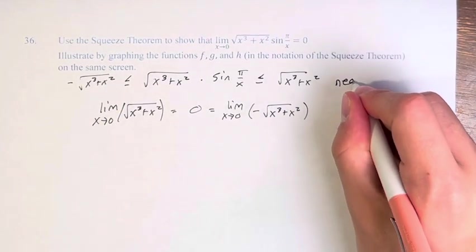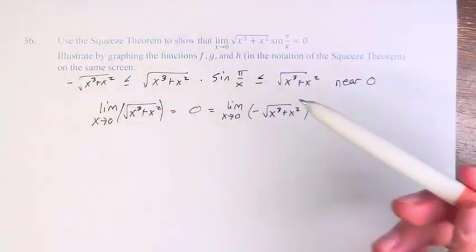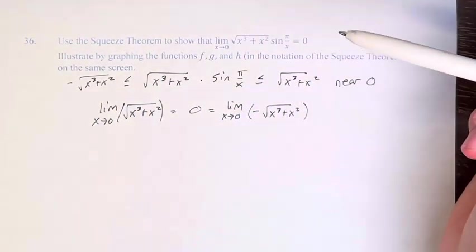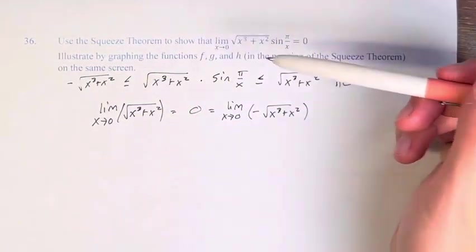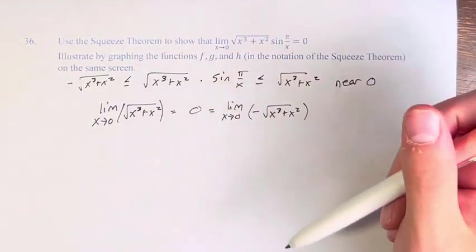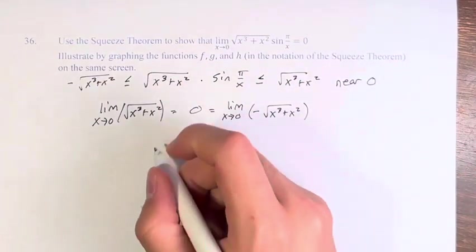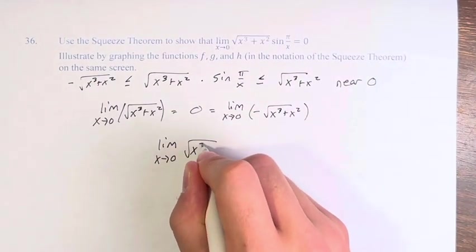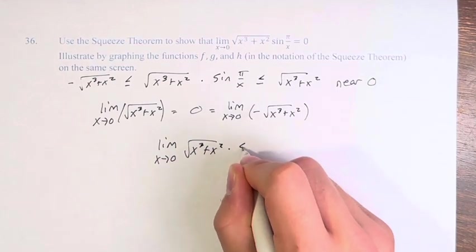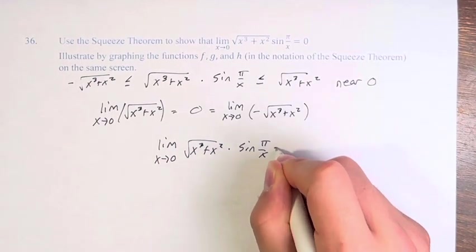And near 0, and at all values, but especially near 0 is where it's important, this function is in between the two functions whose limit as x approaches 0 goes to 0. We therefore know that the limit as x approaches 0 of our function square root of x cubed plus x squared times sine of pi over x is equal to 0.